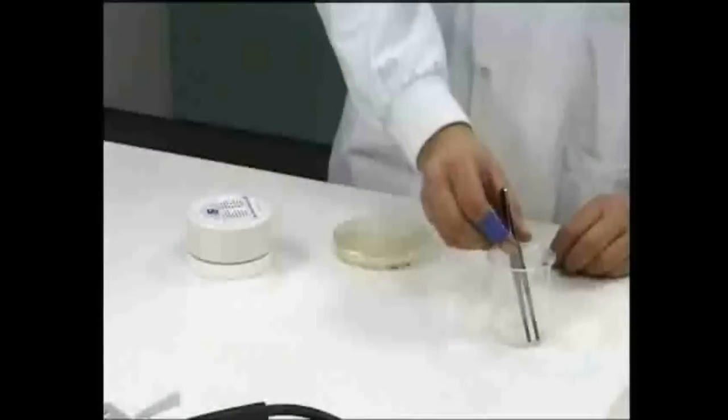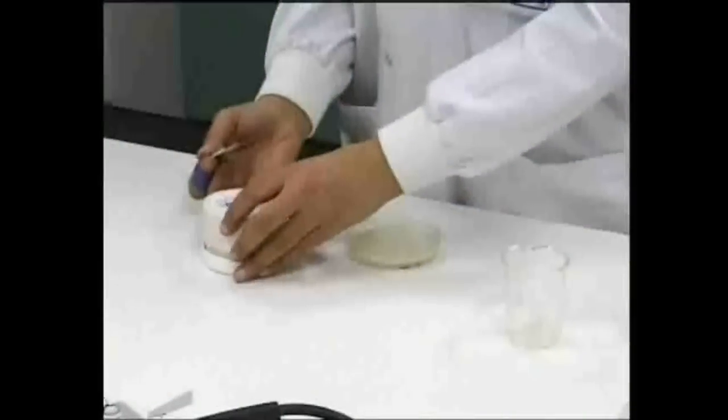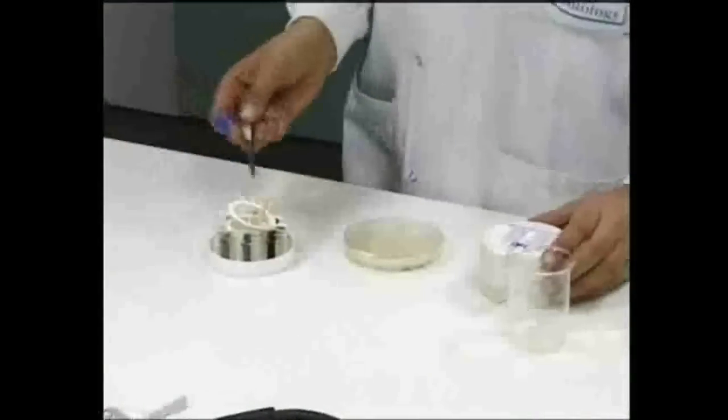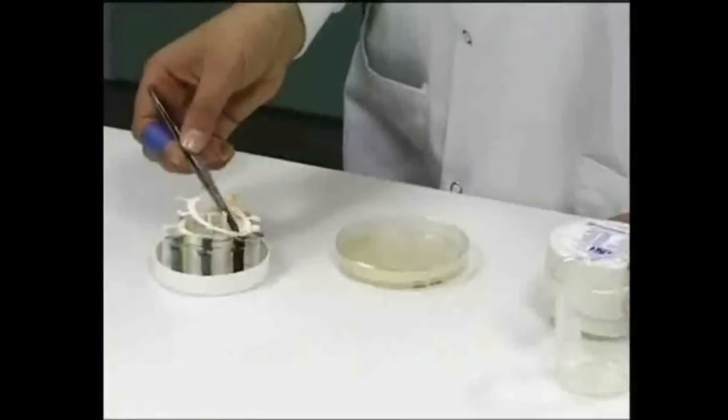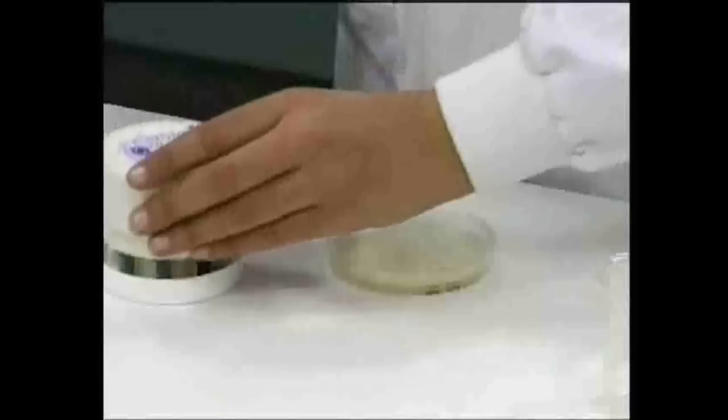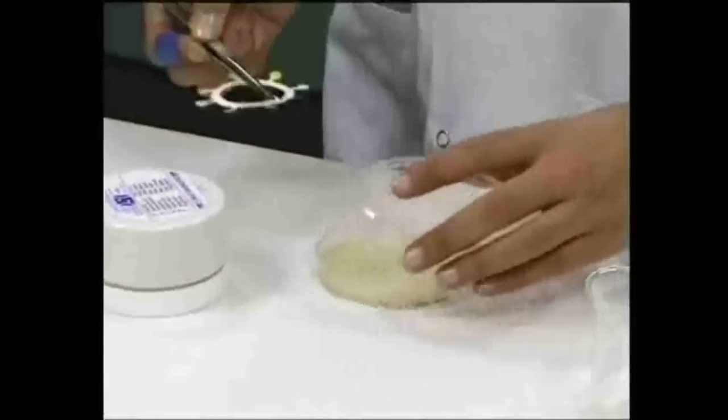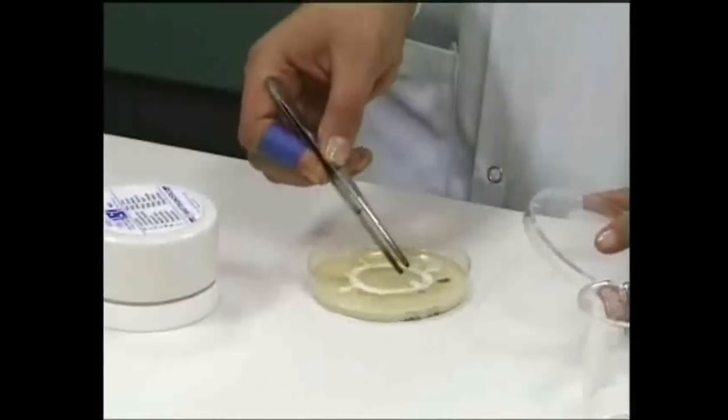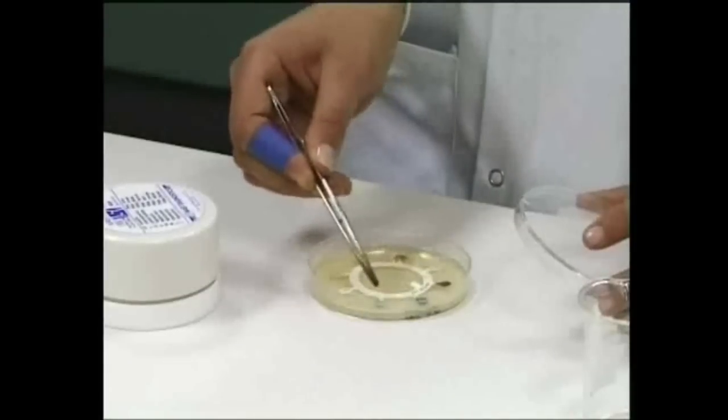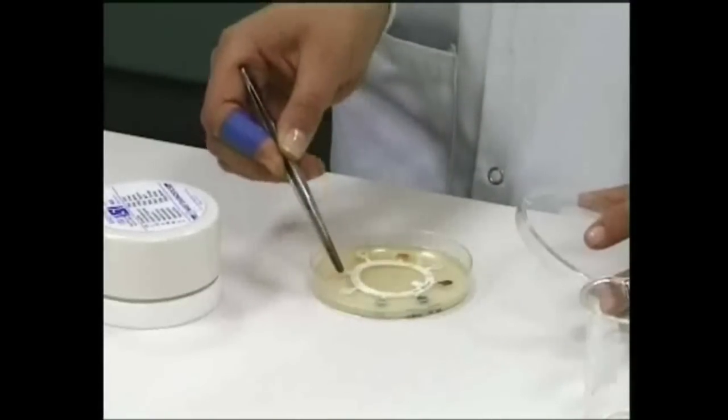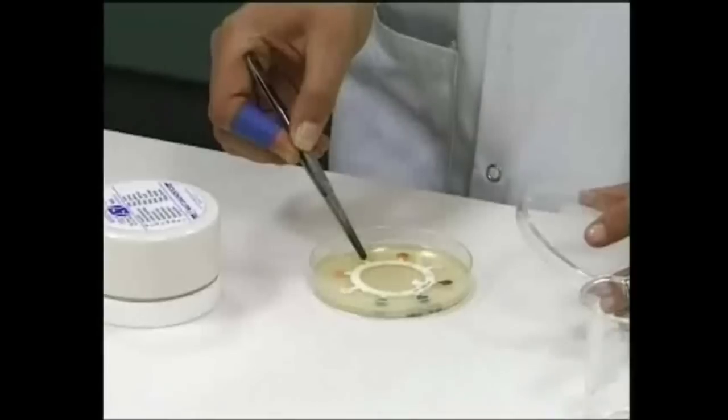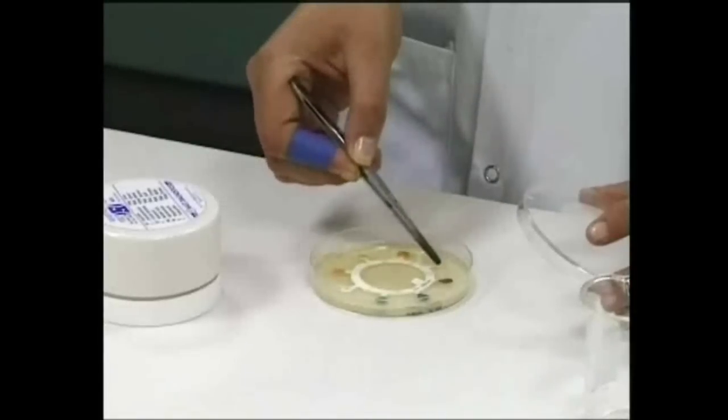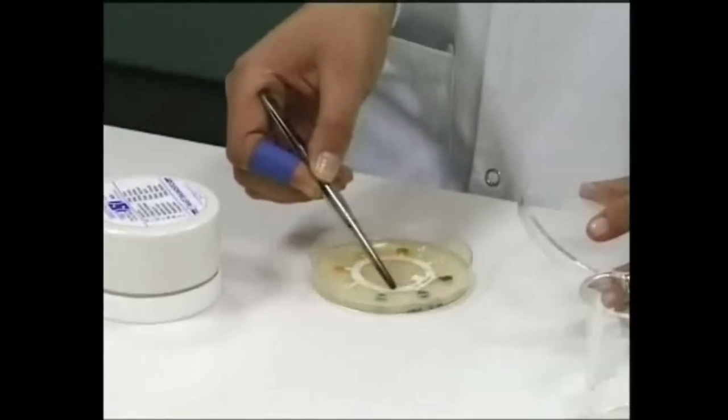Alternatively, the substances may be impregnated into sterile discs of filter paper. Inhibition due to antibiotics is demonstrated by placing paper discs containing antibiotics onto the surface of the agar. Clear zones around the discs or wells demonstrate inhibition of growth.